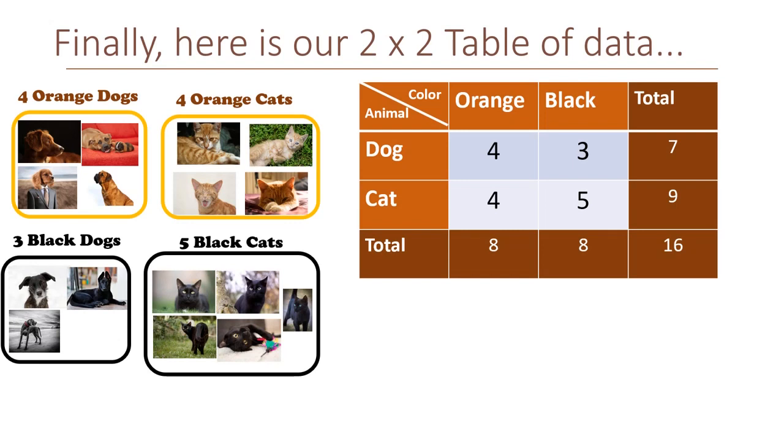Okay, so let's make our 2x2 table. We have 4 orange dogs, 3 black dogs, 4 orange cats, and 5 black cats.